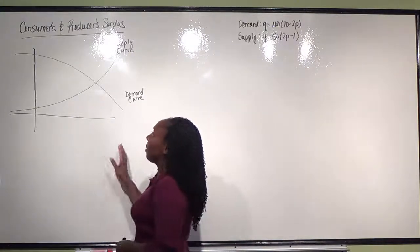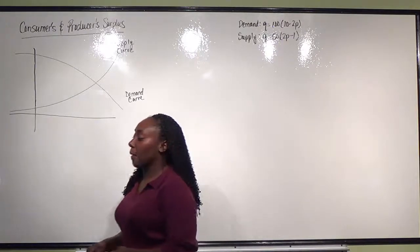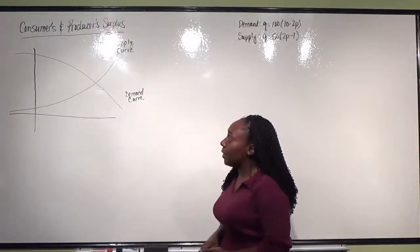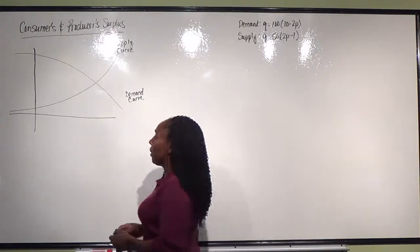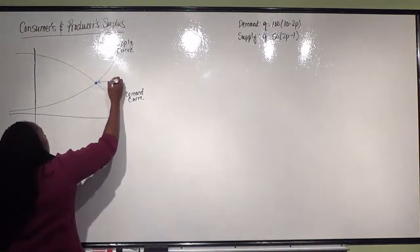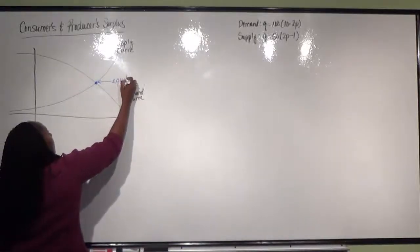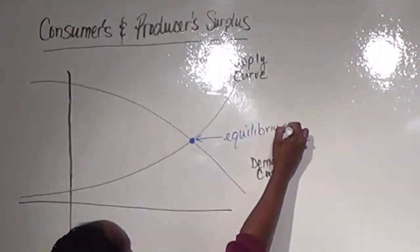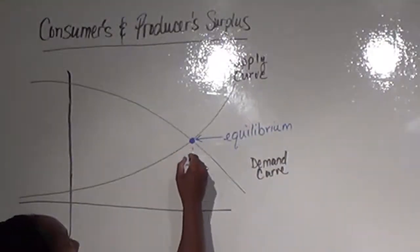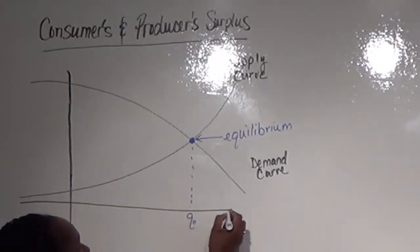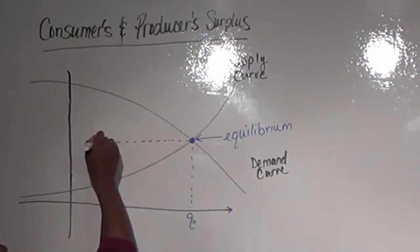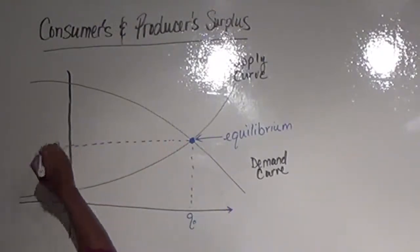Consumers and Producers Surplus has a lot to do with supply and demand. If I'm looking at a supply curve and a demand curve, we already know a little bit about these curves. For example, we know that the point where they meet is called the equilibrium — the point at which both supply and demand are equivalent. This is what we consider the equilibrium quantity, and over here, this is what we consider the equilibrium price.